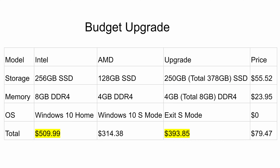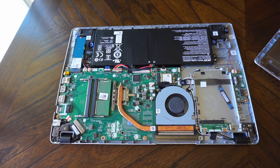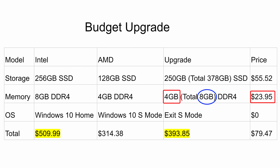You can do the same thing with memory. The Intel version comes with 8GB of RAM whereas the AMD version comes with 4GB. There are two DIMM slots — one is empty and the other is populated with a 4GB DDR4 stick. You can buy the same 4GB DDR4 RAM for about $24, and that will bring your AMD configuration at par with the Intel configuration when it comes to memory.